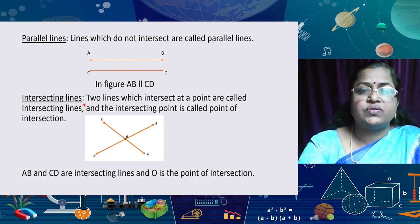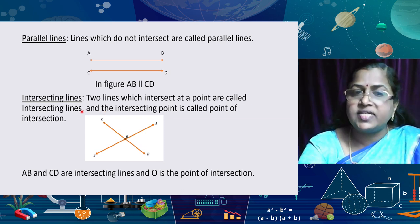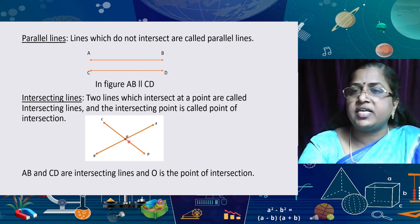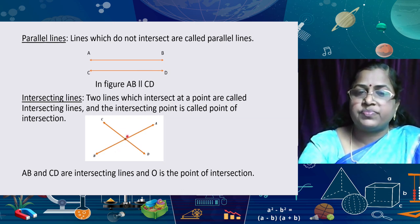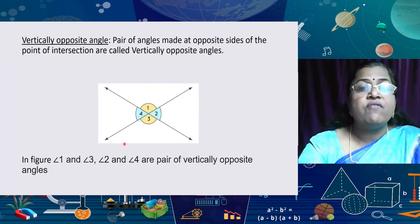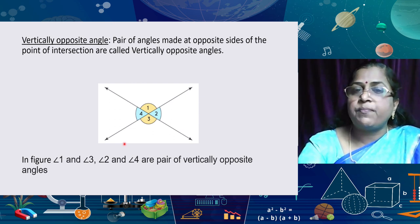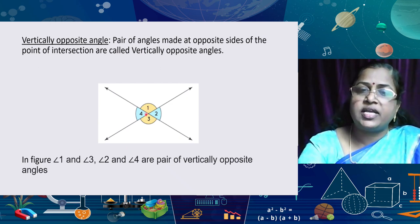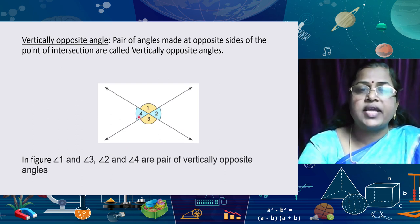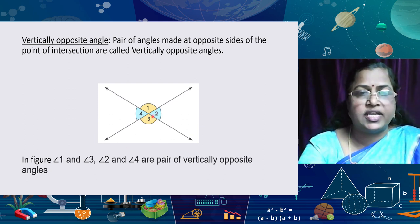Then, intersecting lines: two lines which intersect at a point are called intersecting lines, and the intersecting point is called the point of intersection. Here AB and CD are two intersecting lines, and O is the point of intersection. We can see four angles formed. The pair of angles made at opposite sides of the point of intersection are called vertically opposite angles. Angles 1 and 3 are vertically opposite, and angles 2 and 4 are also a pair of vertically opposite angles.